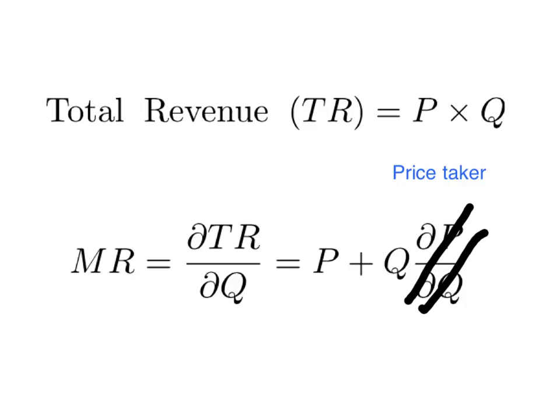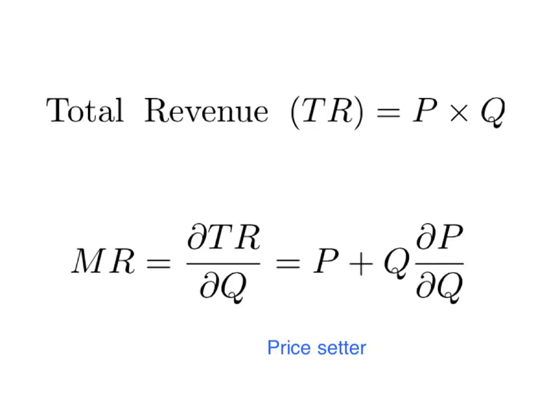That's going to change when we move from a price-taker to a price-setter. For a firm that sets a price, like a monopoly, to sell an extra unit, that firm is going to have to lower the price in order to encourage buyers to buy more. The firm faces a downward-sloping demand curve.